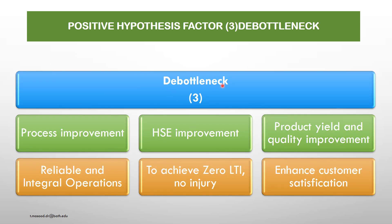In the debottleneck concept, to achieve debottleneck, you have to improve three key elements. First, process improvement — reliable and integral operations. Number 2, HSE improvement to achieve zero LTI, no injury. Third and last, very important: product yield and quality improvement, which leads to enhanced customer satisfaction.